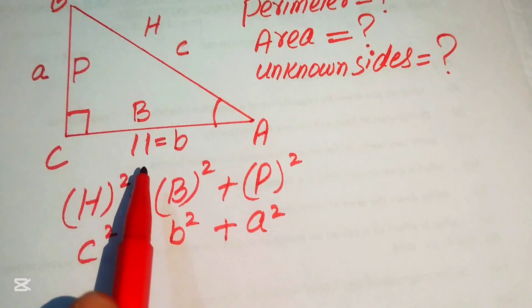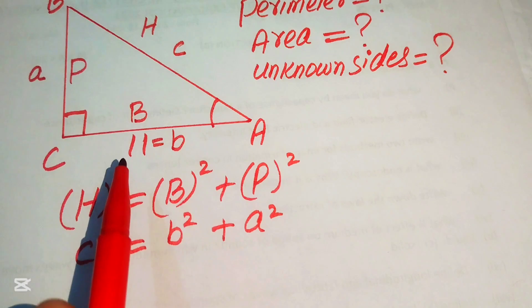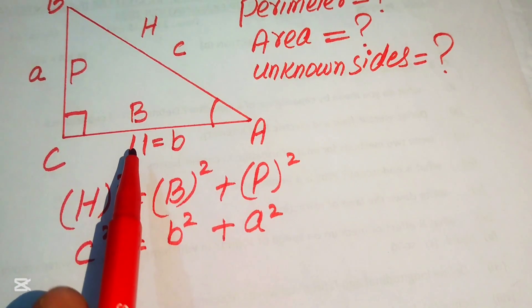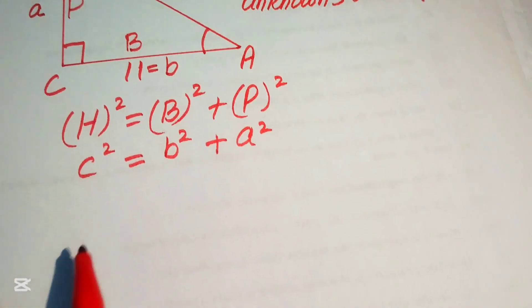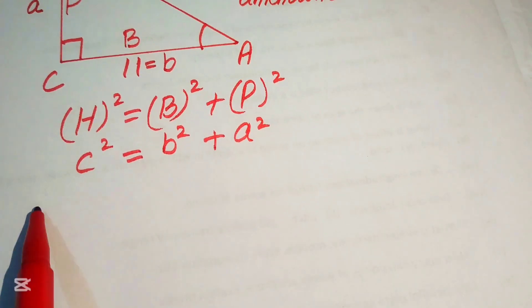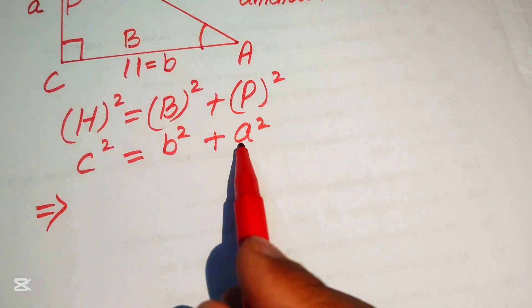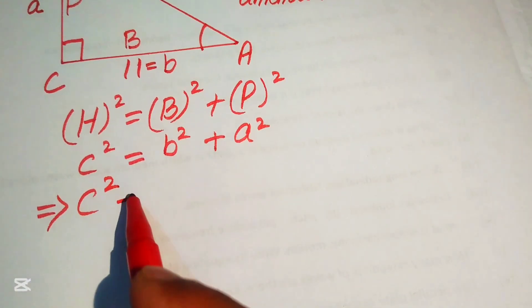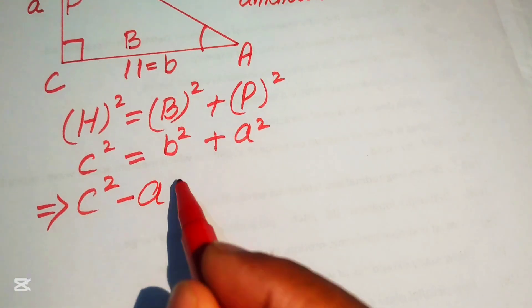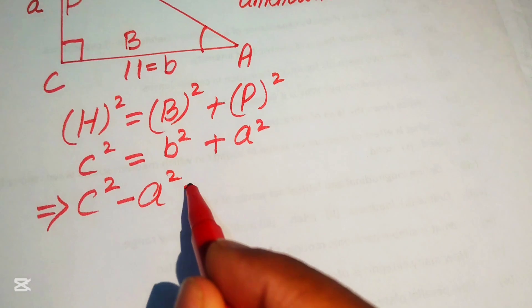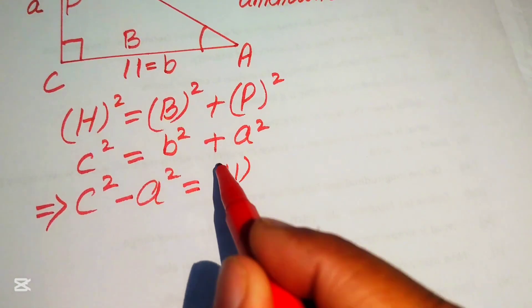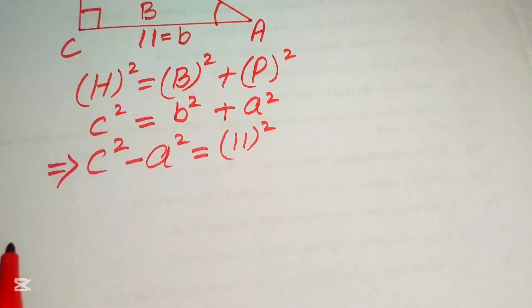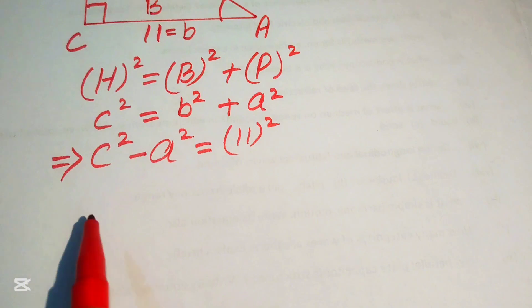We have the value of one side: b equals 11. Substituting b = 11 and rearranging, we move a² to the left-hand side to get: c² − a² = 11² = 121.